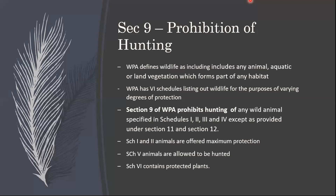WPA has six schedules listing each and every wildlife species for protection to varying degrees. Section 9 prohibits hunting of any animal listed in any schedule. Sections 11 and 12 give specific provisions for chief wardens and other wardens to grant specific licenses for research, training, education programs, and tourism — that is how national parks and sanctuaries are open to the public. Schedule 1 and 2 animals receive the maximum protection; Schedules 3 and 4 have normal protection; Schedule 5 contains animals which may be hunted, like crows and fruit bats. Schedule 6 was recently amended and contains protected plants.